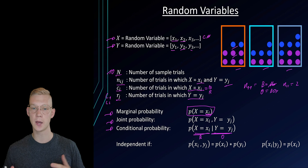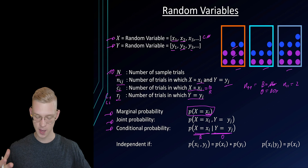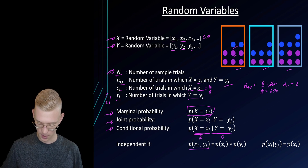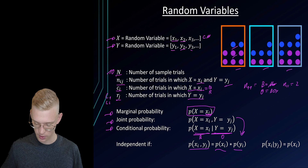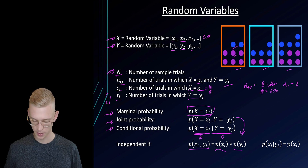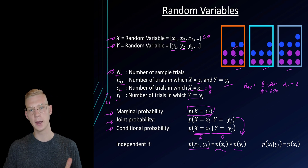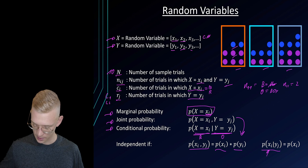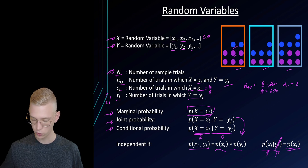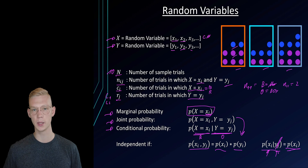We can also say that we have independent variables if the joint probability of xi and yj is equal to just the multiplication of those probabilities. And if they are independent, the probability of x given y doesn't depend on y and is equal to just the probability of x.